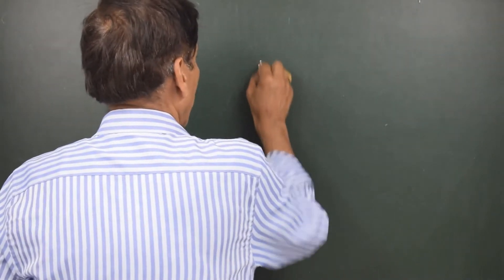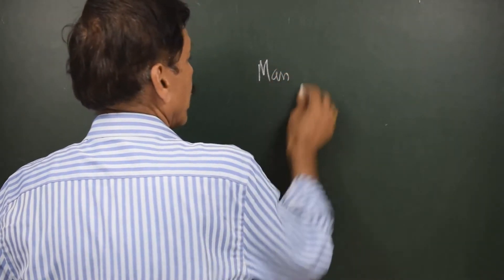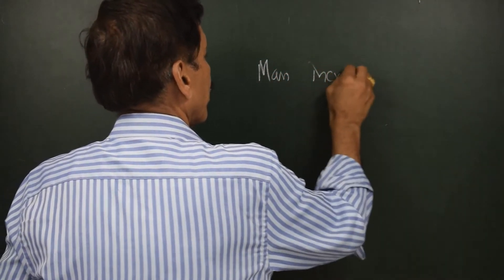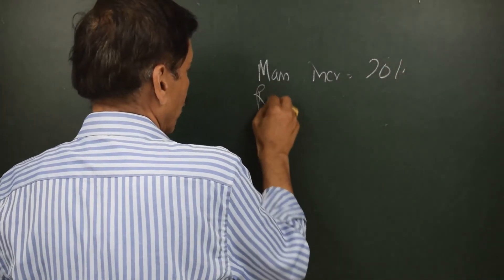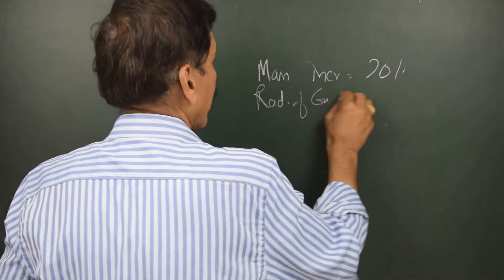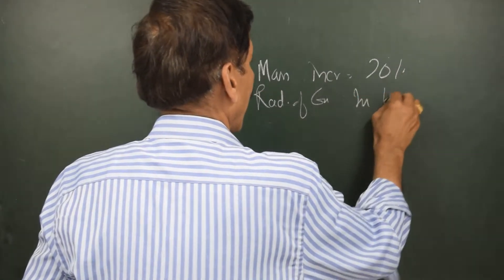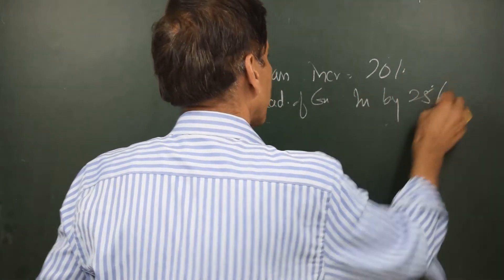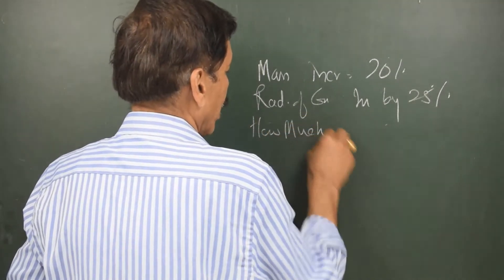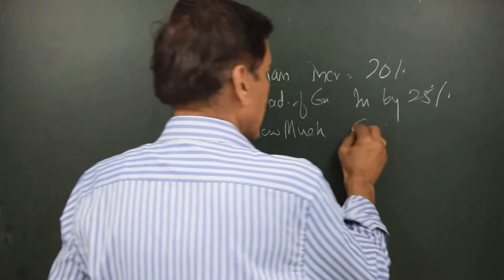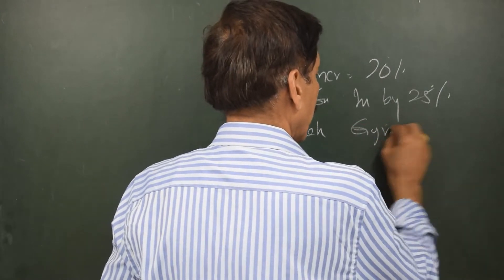Sometimes you might be asked a question based on absolute fundamentals. For example, there might be a question like if the mass is increased by 20% and the radius of gyration increased by 25%, how much will be the change in gyroscopic inertia?